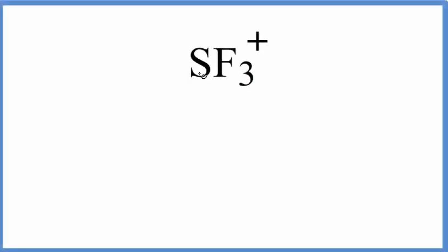In this video we'll write the Lewis structure for the SF3 plus ion. So the first thing we do for Lewis structures is count up the valence electrons. Sulfur is in group 16, sometimes called 6A, six valence electrons. And then fluorine right next to it, 17, that'll have seven valence electrons, but we have three of those.